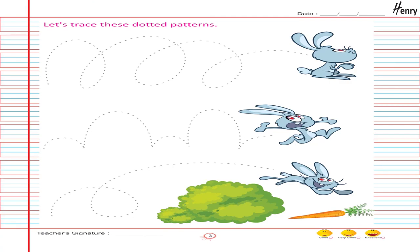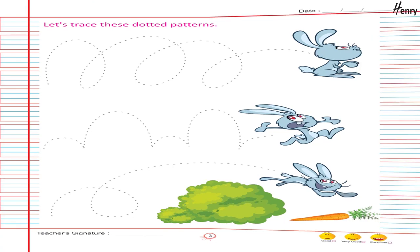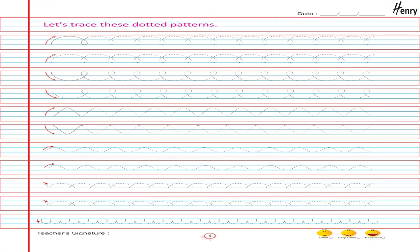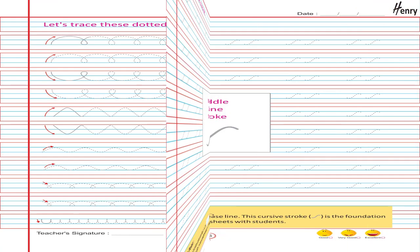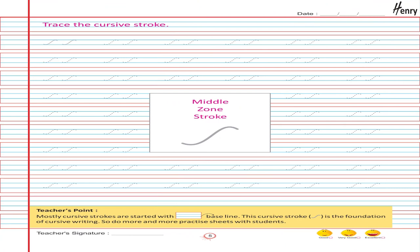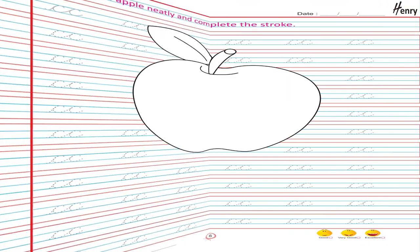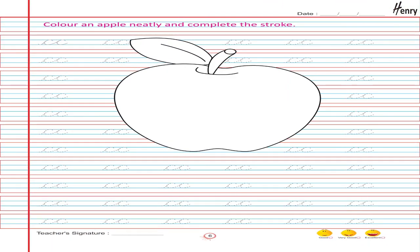Let's trace these dotted patterns. Trace the cursive stroke. Middle zone stroke. Color an apple neatly and complete the stroke.